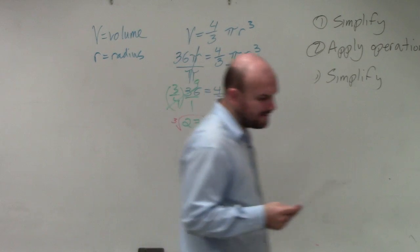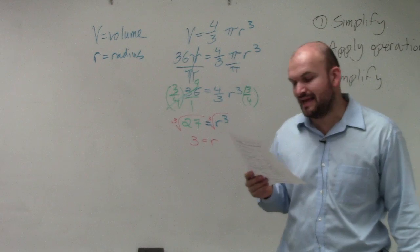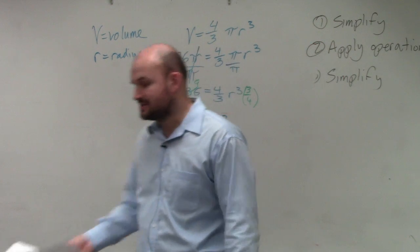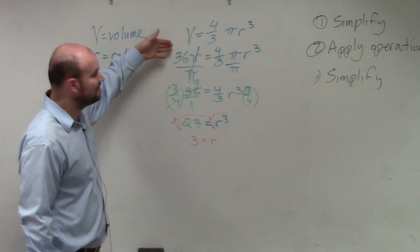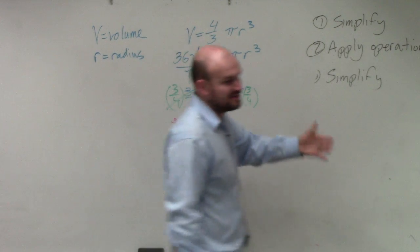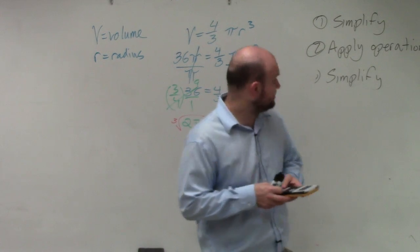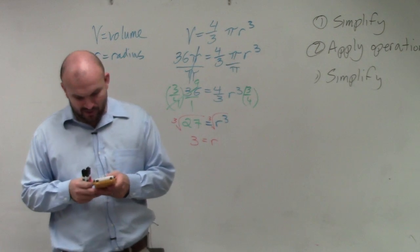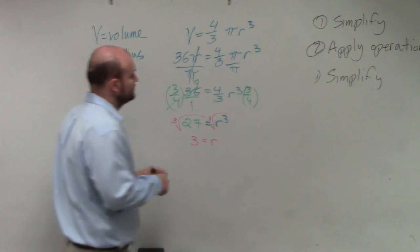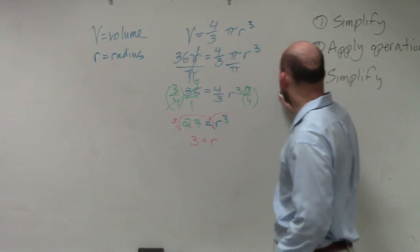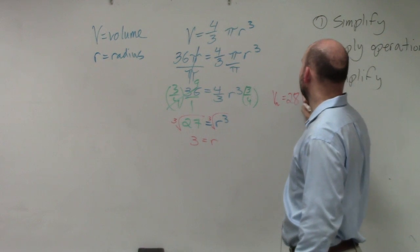We're not done yet. The next problem, B says if the volume is increased by a factor of 8, what would be the new radius? So basically, what they're saying is if your volume increases by a factor of 8, increasing by a factor of 8 would be multiplying it by 8. So what I'm going to do here is I'm going to take my volume, 36, and I'm going to multiply it by 8. So now that's 288 pi. So my new volume is 288 pi.